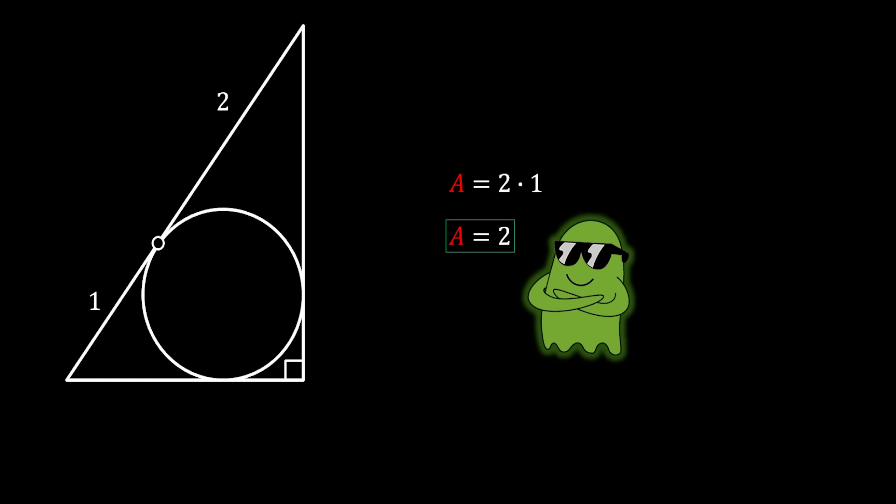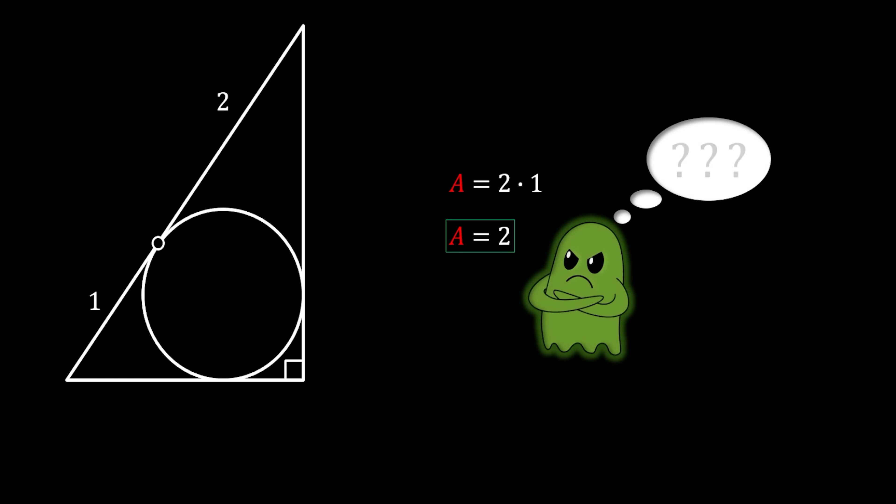I know what you're thinking right now — how did that happen? How did you just write those two numbers, multiply them, and get the solution? That doesn't make any sense. Well, actually it does make sense if you know the theorem I'm going to show you right now. And I'm also going to prove this theorem to you.